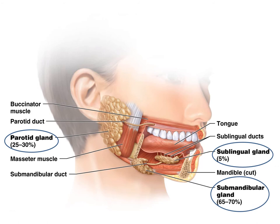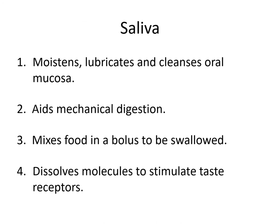What is the function of saliva? It moistens, lubricates, and cleanses the oral mucosa — it keeps your mouth wet and keeps it clean. It's going to aid in mechanical digestion. The next time you eat something, think about what your tongue is doing — manipulating the food, moving it around your mouth to help moisten it and get it ready to swallow. It mixes the food into what's called a bolus — this little moist ball of food is called a bolus, getting ready to be swallowed. Saliva also begins to dissolve the molecules, with enzymes aiding chemical digestion and stimulating taste receptors.